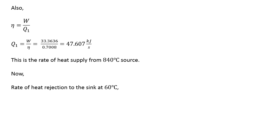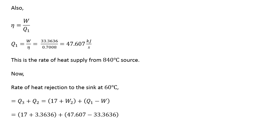The rate of heat rejection to the sink equals Q3 + Q2, as seen in the flow diagram. Substituting Q4 = 17, W2 = 3.3636, Q1 = 47.607, and W = 33.3636, we calculate the total heat rejected to the sink maintained at 60 degrees centigrade.